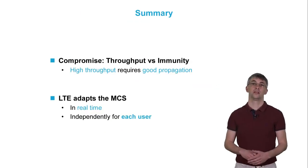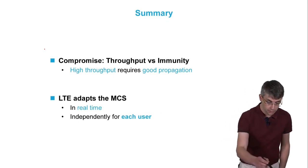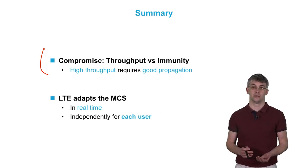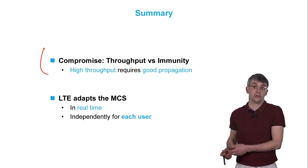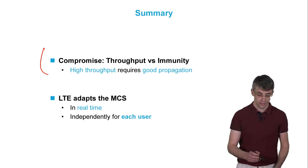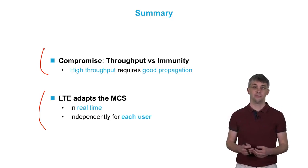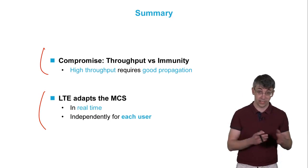What are the important points of this lesson? First, to use efficient modulation, we need good propagation conditions. Otherwise, we have to switch to a more robust modulation. But in this case, the throughput will be lower. We can also modify the coding rate. Second, LTE continuously adapts this parameter for each terminal in real time.